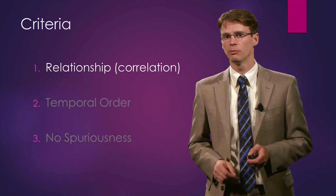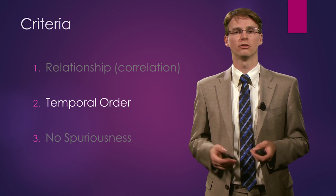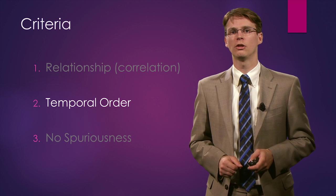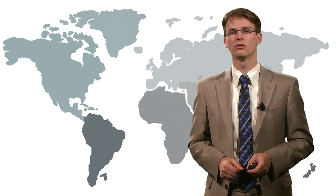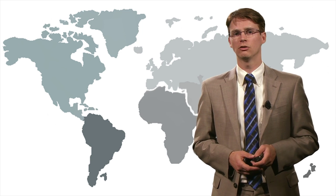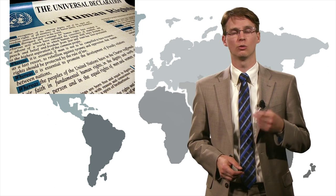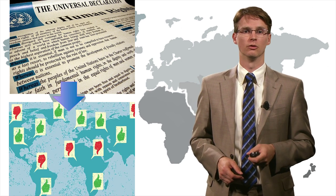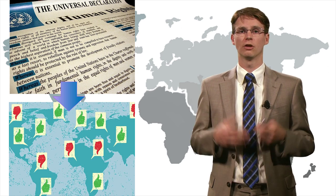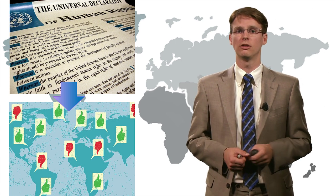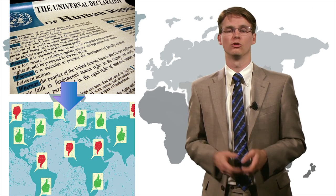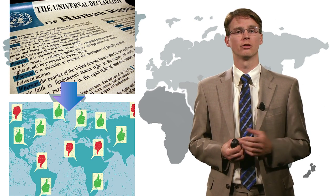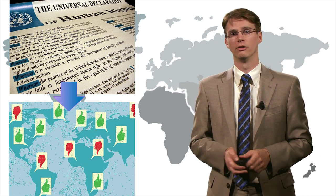A little bit more tricky is the temporal order. The temporal order implies that there needs to be a clear cause and a clear effect. For example, a researcher interested in whether the ratification of human rights treaties has an effect on human rights compliance — if a country signs a treaty, is it going to be more compliant? Here there's a clear temporal order: ratification has an effect on compliance.